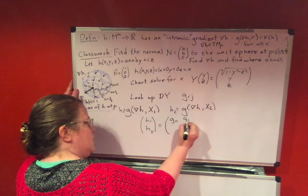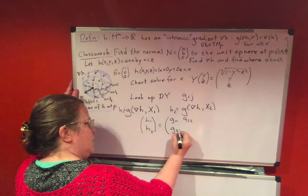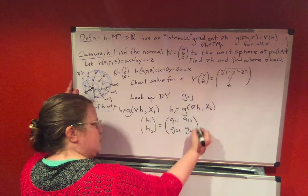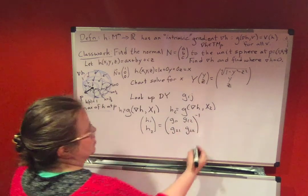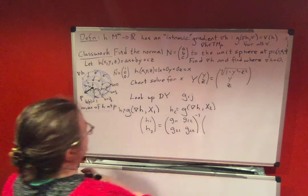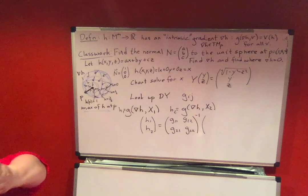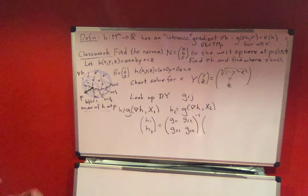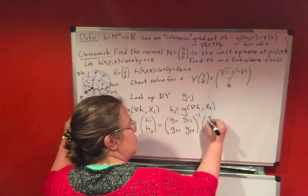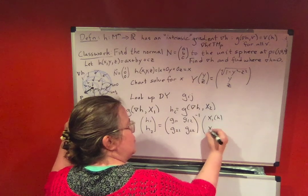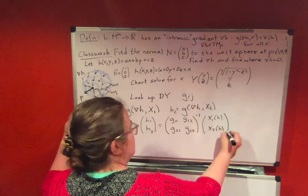g11, g12, g21, g22, inverse matrix. We have to find that inverse matrix times the x1 derivative of h and x2 derivative of h. And you have to do all this work.